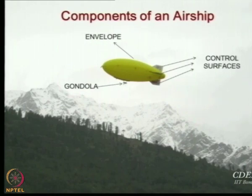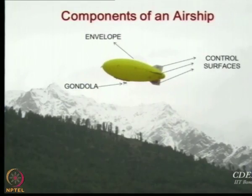The envelope of the airship is equivalent to the wing of the aircraft — the main lift-producing system. The gondola or body below the envelope is equivalent to the fuselage of the aircraft where you put the passengers and payload. Interestingly, the gondola is much smaller in size compared to the envelope, whereas in aircraft the fuselage is generally bigger and the wing is relatively smaller or of the same size.